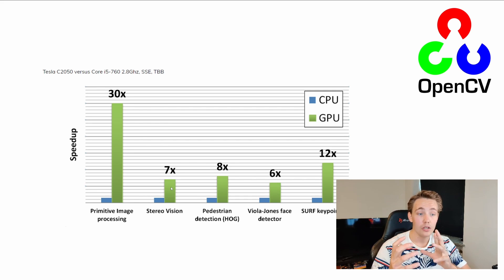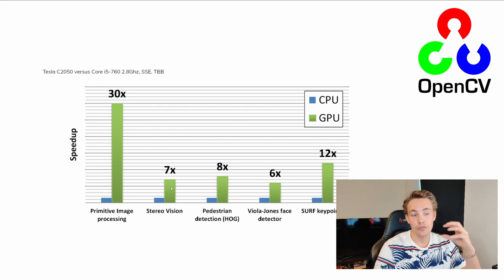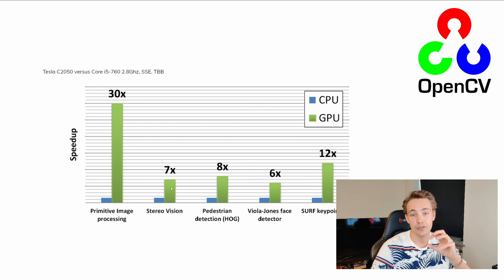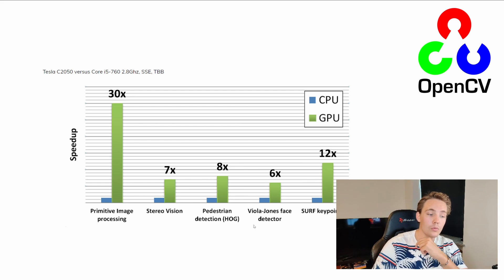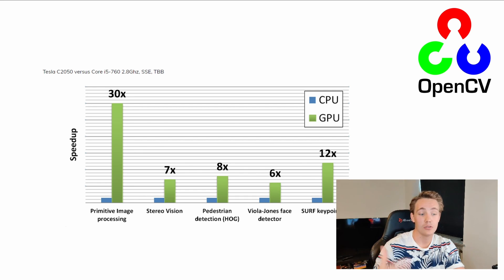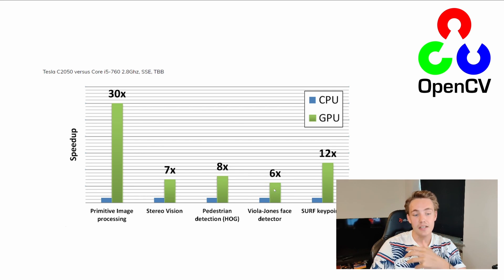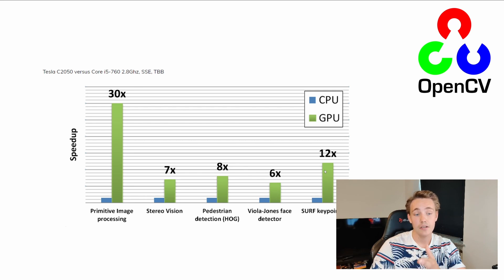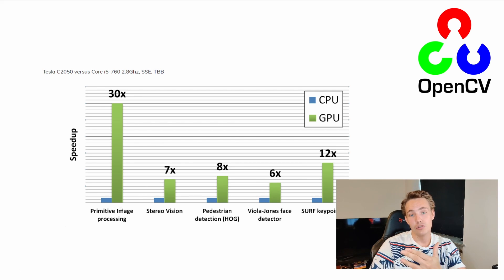Later throughout this tutorial, we're going to use stereo vision with GPU where we'll create actual depth maps or disparity maps, then convert those into depth maps so we have information about our environment and the distance to different objects in the image frame. We also have pedestrian detection with background segmentation, which we can speed up by up to eight times. We also have the face detector using Viola-Jones with Haar cascades, and key point descriptors like SURF. In the first videos, we're going to focus on primitive image processing techniques and how to use those methods from the OpenCV CUDA module.